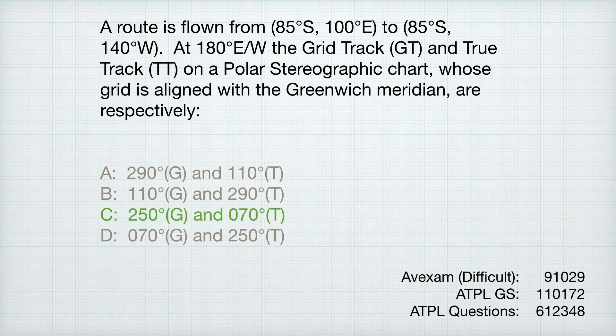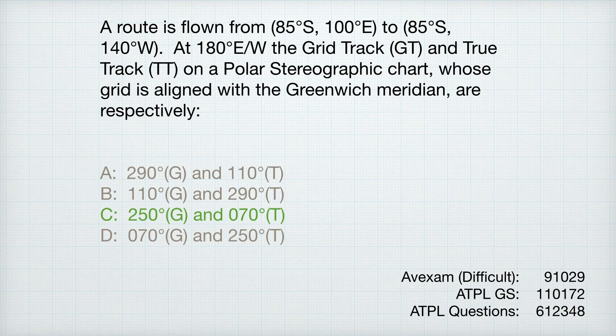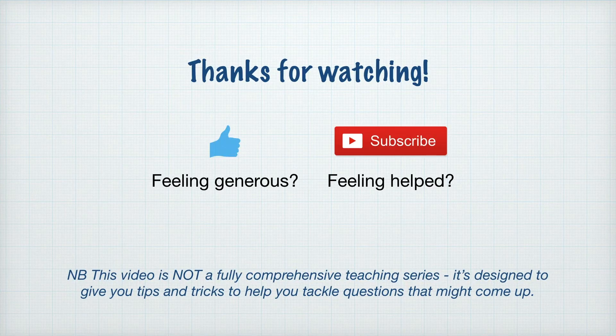On AVEXAM, that question is 91029. On ATPL-GS, 110172. And on ATPL Questions, 612348. So there we have it — that's polar stereographics. I hope that makes sense and has made things a little easier. I hope this method is one you'll find useful. If it isn't, that's fine — there are loads of different ways of doing it. This is just a quick, simple method I like and was taught. Stay tuned for more ATPL tip videos, and if you've got a tip that other people should know, let me know and I'll make a video about it. Thank you for watching — like, subscribe, all that good stuff, and good luck. See you next time.